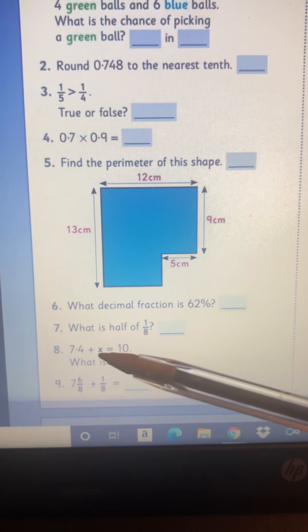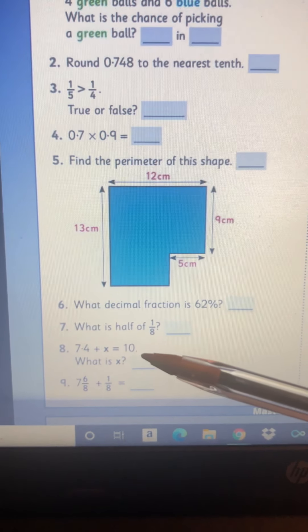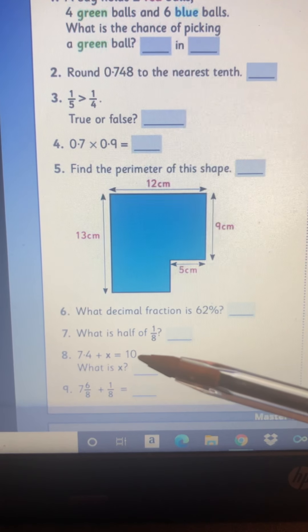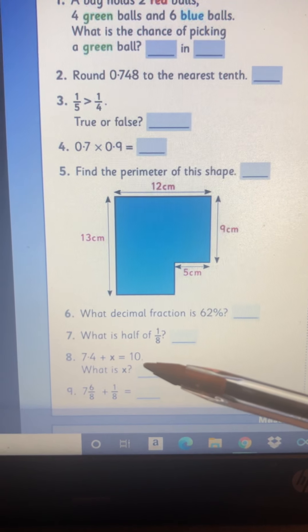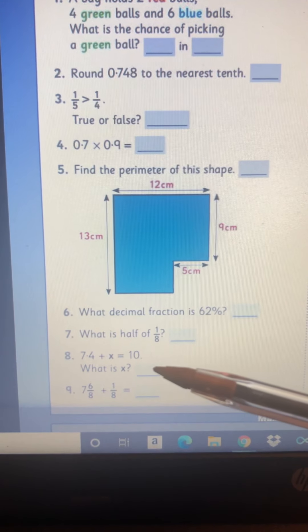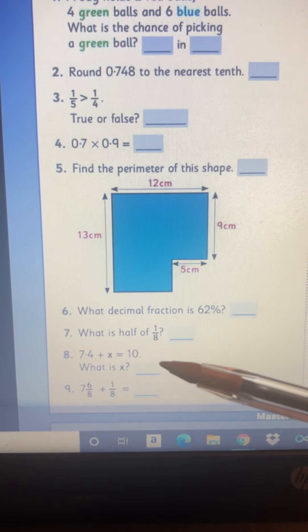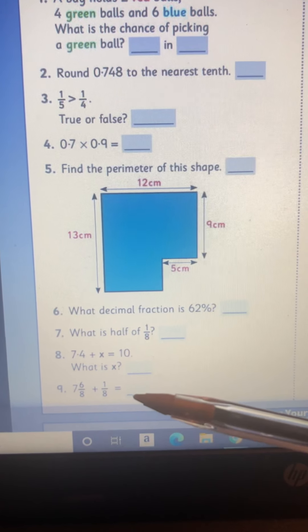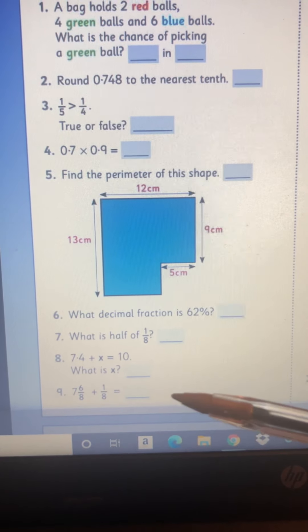For 8, 7.4 plus x equals to 10. So what is x? So to get x, do a subtraction sum, 10.00 minus 7.4. Or do it in your head if you can. 9, 7 and 6 eighths plus one eighth. Very easy. Add the whole numbers first and then add the fractions.